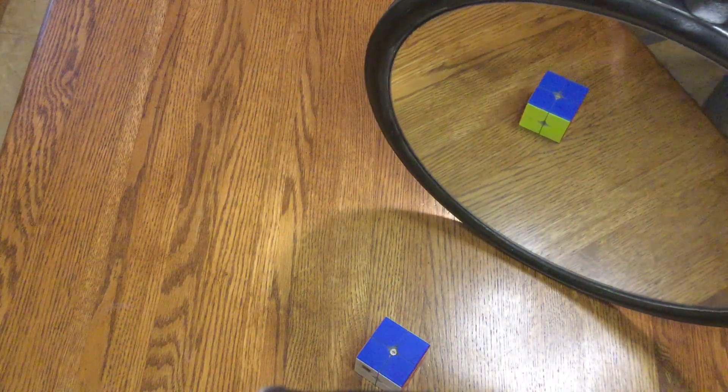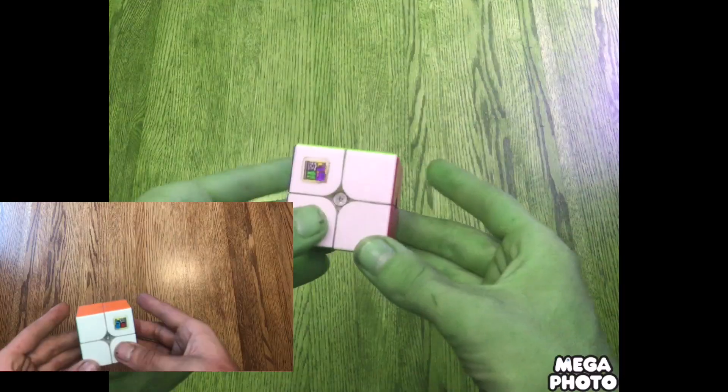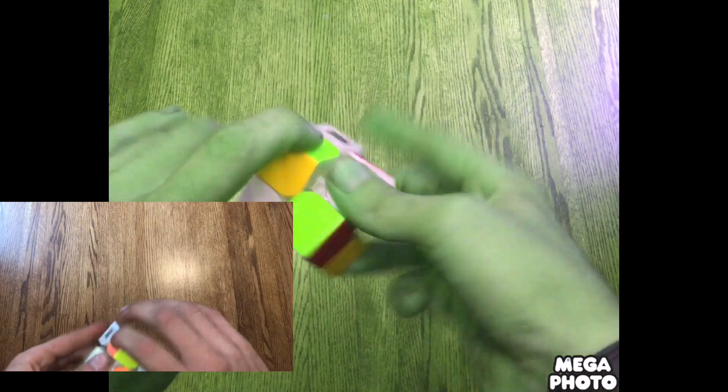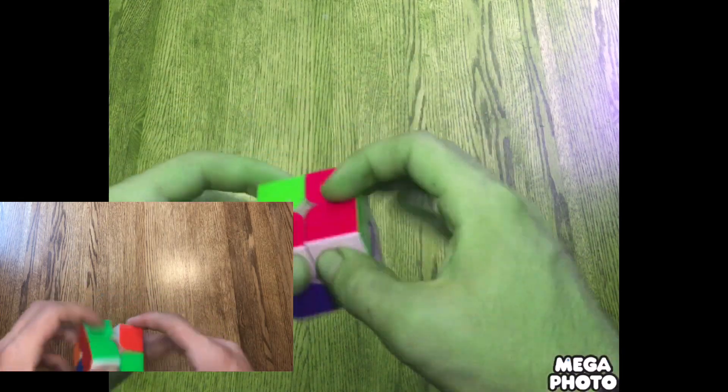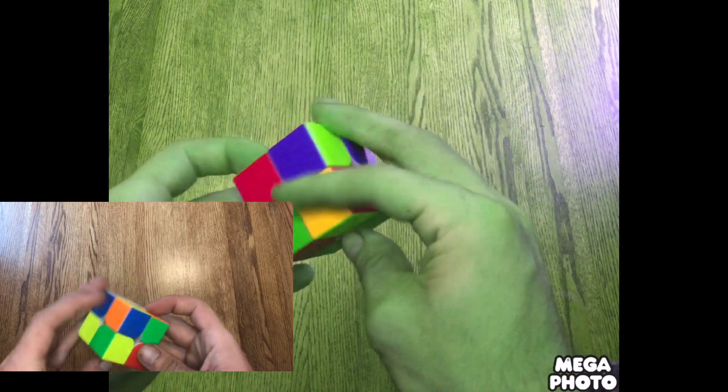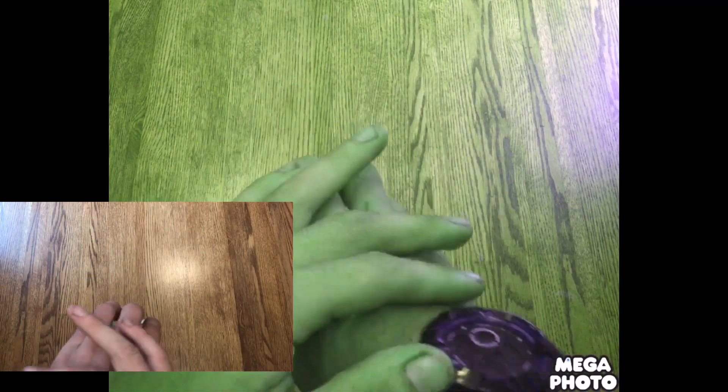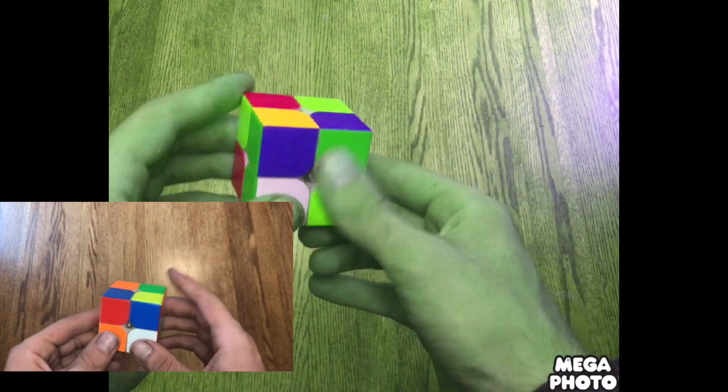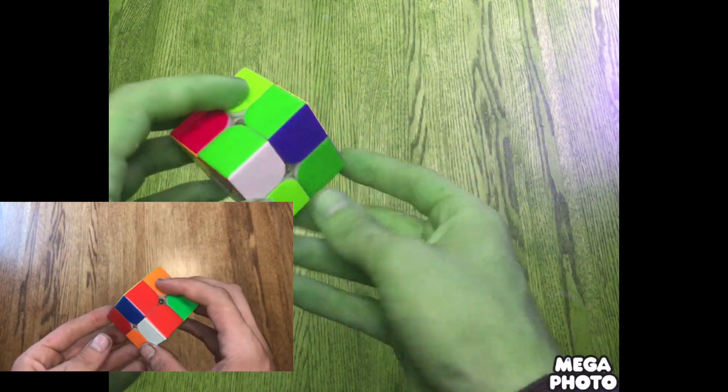I'll save the bigger cubes for a challenge in a later video. You have two screens so you can see what is actually happening and what I am seeing. The goal is to solve the 2x2 in under 30 seconds. Typically I average well under 10 seconds, so this should be easy. We'll see.